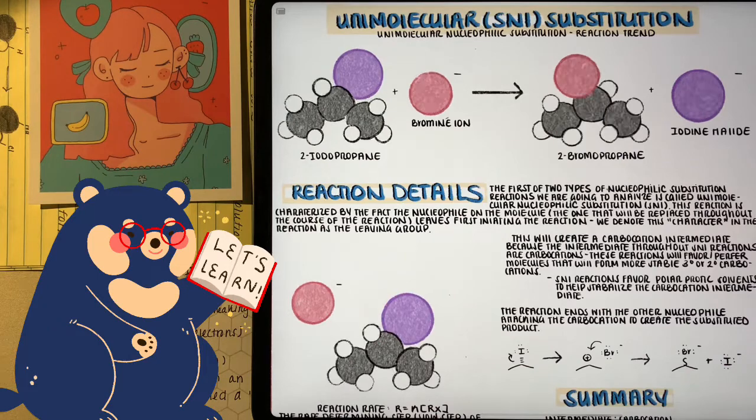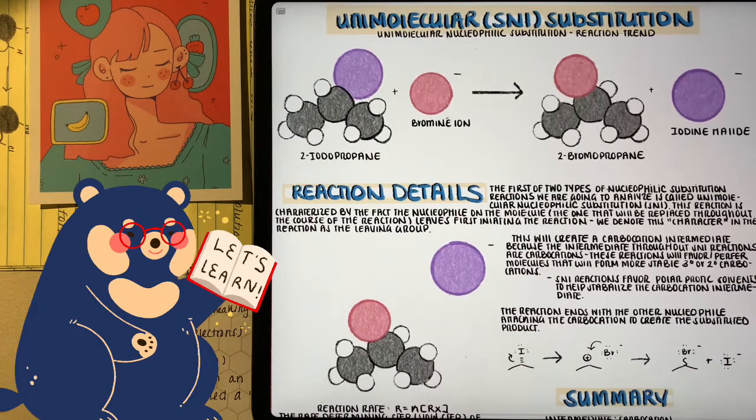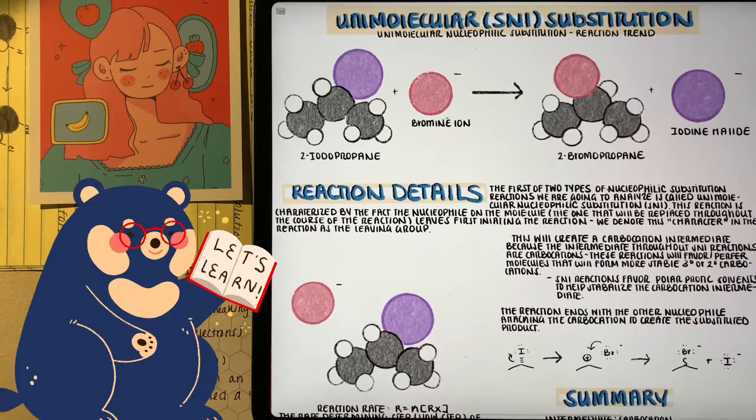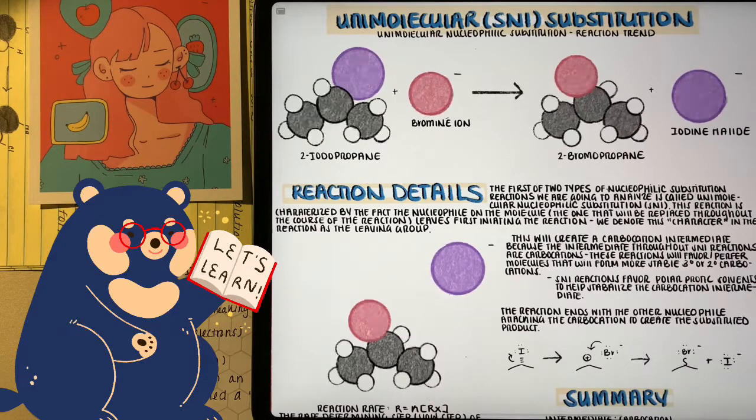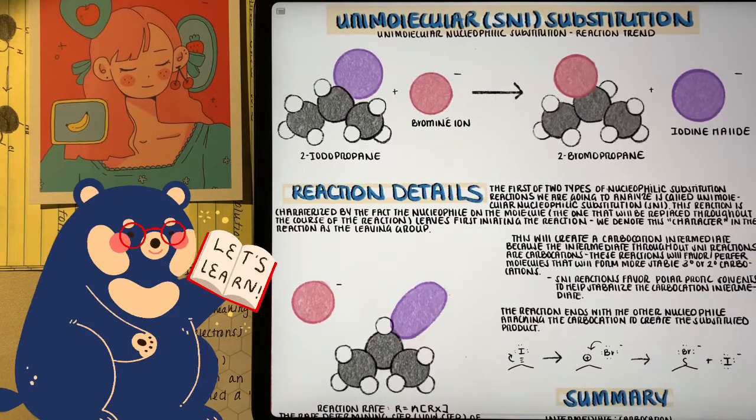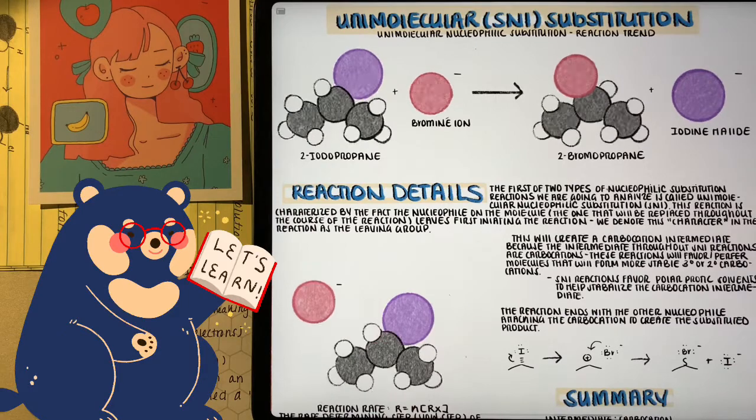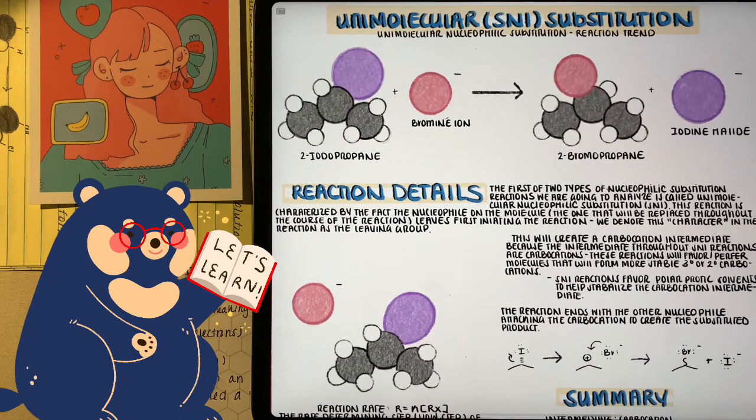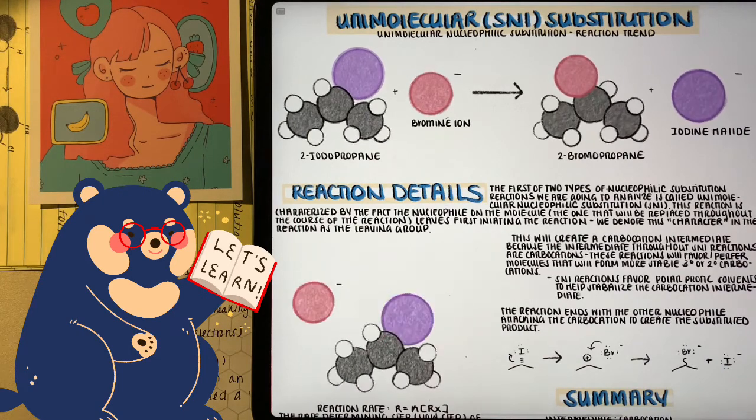Now that we know that SN1 reactions favor formation of tertiary or secondary carbocations, let's continue with our reaction. The iodine leaves the molecule, taking the shared electron with it, creating a secondary carbocation. Then, our bromine ion, to finish the reaction, attacks the carbocation, creating our new molecule, 2-bromopropane.